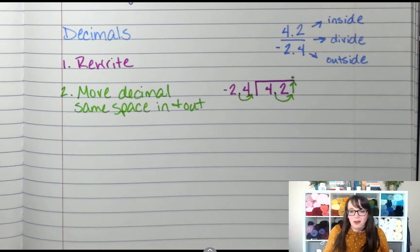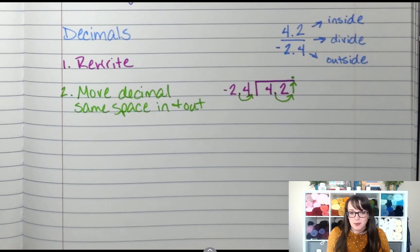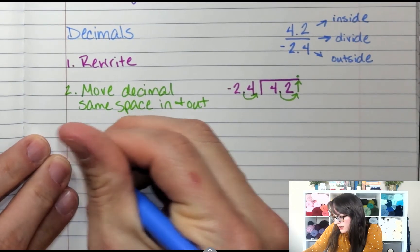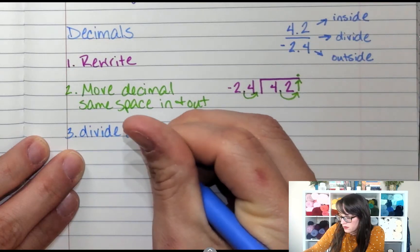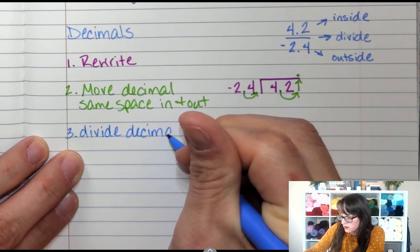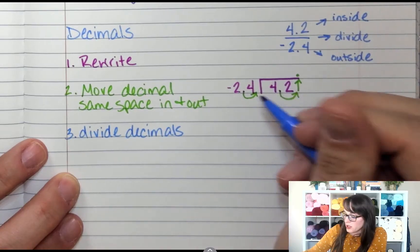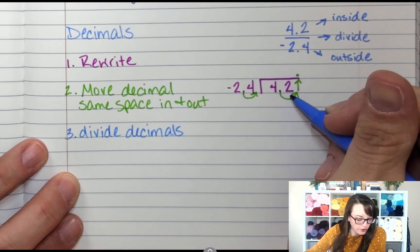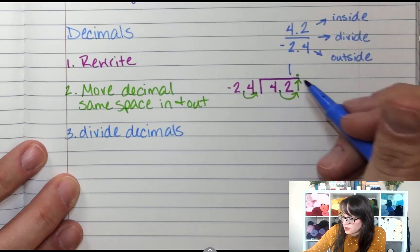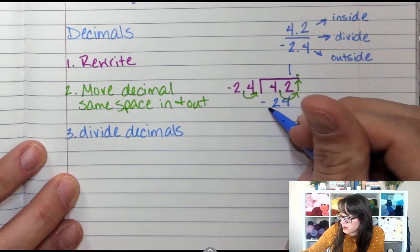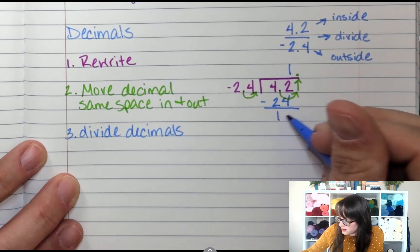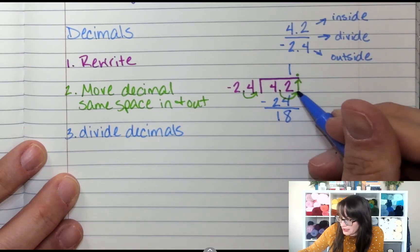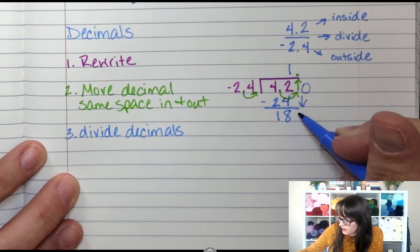So now it's set up, and now it's just 42 divided by negative 24, so we're going to divide it like normal. We're going to divide like we would divide decimals, and you've been doing this for years. So 24 can go into 42 once. 1 times 24—subtract. What do you get? 18. I'm going to add—there's my decimal. I add a 0, bring it down, bring it down, so now it's 180.